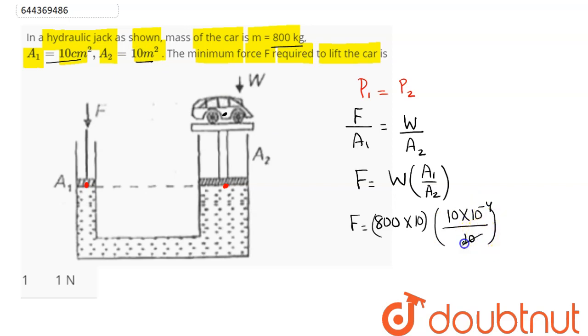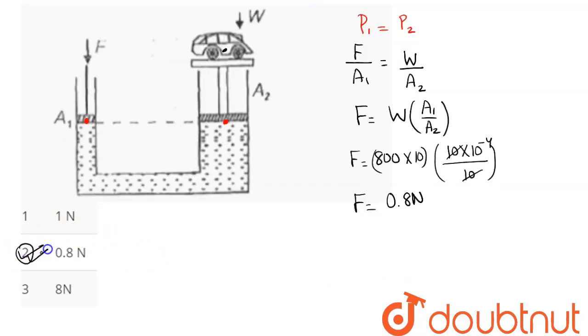Hence we can say this here on calculation, F comes out to be 8000 into 10 power minus 4, which is 0.8 newton. Hence we can see amongst the four options, option number two is the correct answer.